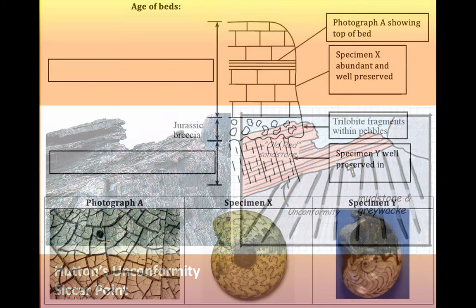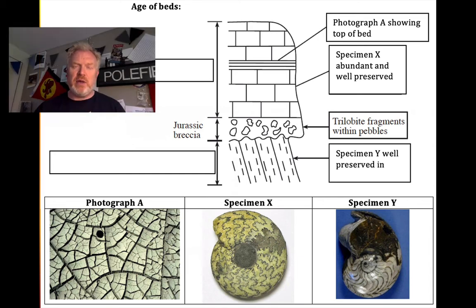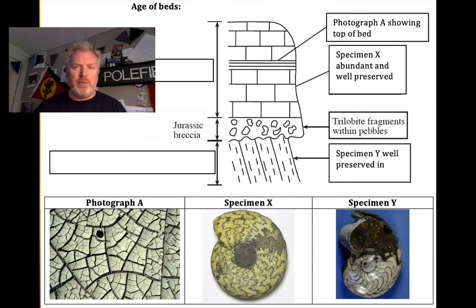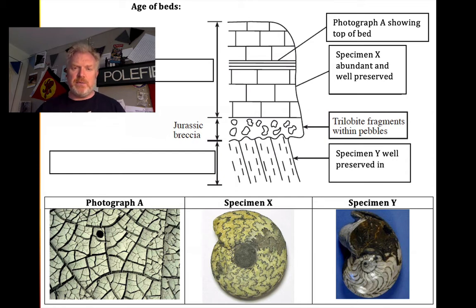For this lesson, we're working on page 25 of our Theme 9 booklets. What we're trying to do is work out what's going on in this sequence of rocks. We've got some information about these rocks and some of the features we can see within them. We've got an age for one of these beds — we can see there's a breccia that's Jurassic in age — and we've got some photographs of some specimens and a feature found at the top of one of these beds. We need to try and work out the age of these and how we can use our principles of relative dating to actually work this out.